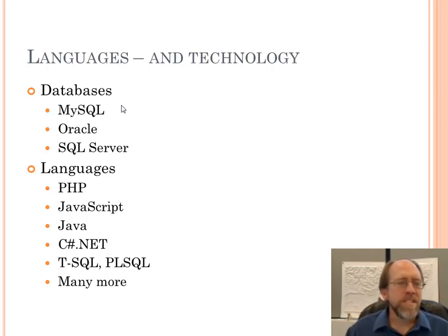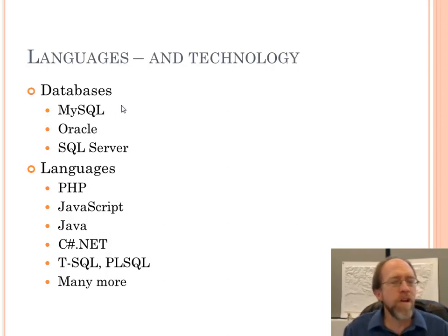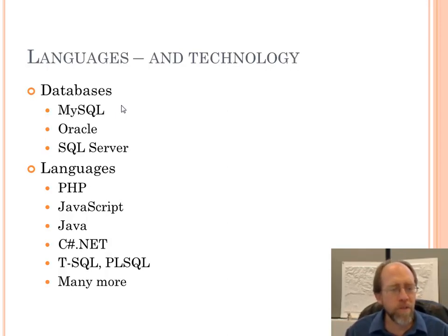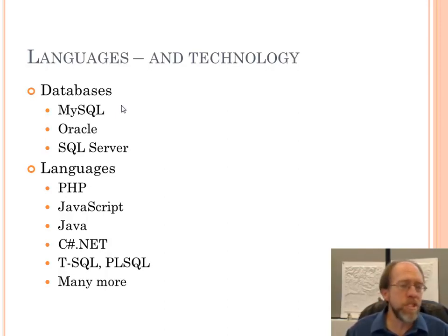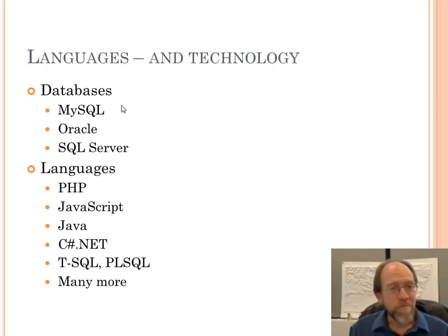Some of the languages and technologies you'll probably learn: databases — I listed a few. Languages very much tied to internet programming include PHP, JavaScript, Java, and .NET — an entire platform really built for doing stuff on the net. I like to program in C#, and I've got a lot written in VB. You can write .NET in multiple languages. For working with databases, there's T-SQL and PL-SQL. There's a lot of technology out there.